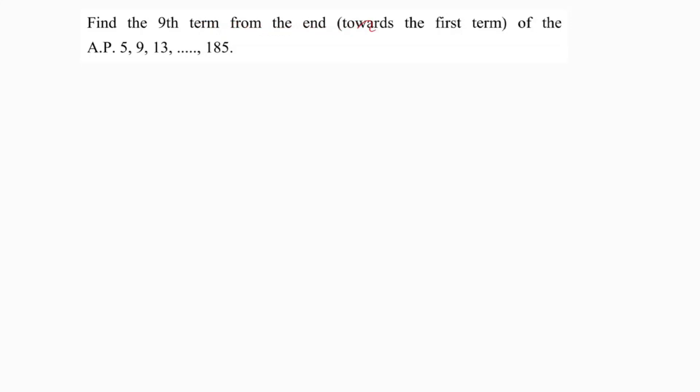Find the ninth term from the end towards the first term of AP. Here the arithmetic series, arithmetic progression series is 5, 9, 13, so on, 185.